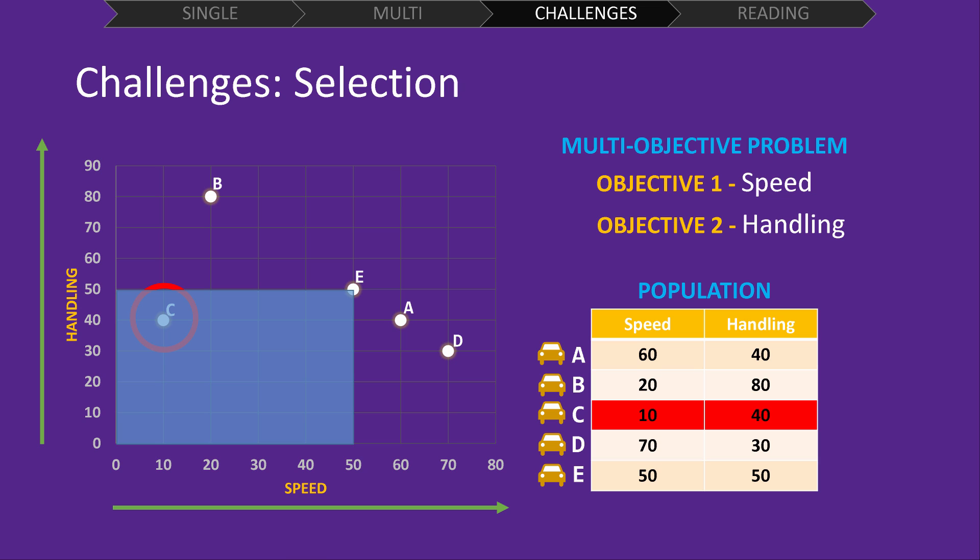Here, I've done the same for solution E. We can see that it also dominates solution C. Moving on to solution A, we can see it still dominates solution C. It matches solution C in handling but it offers much better speed.